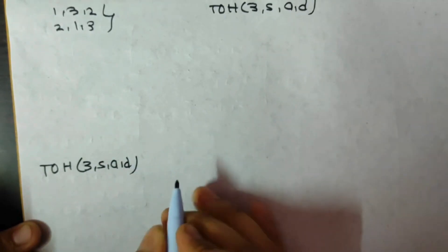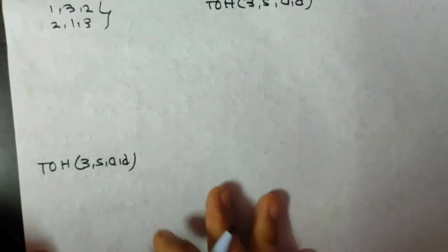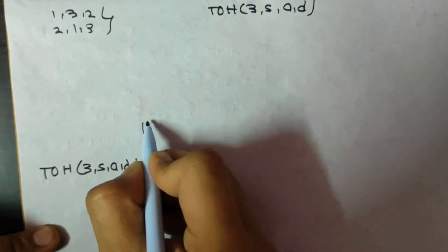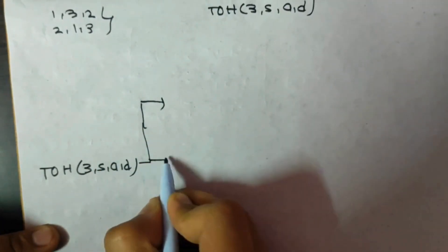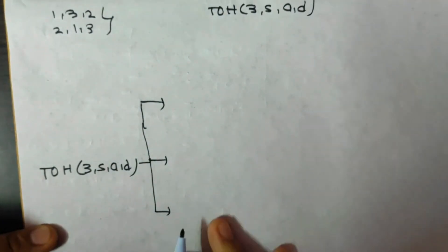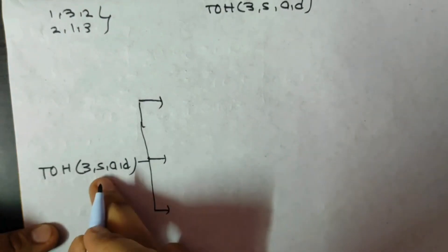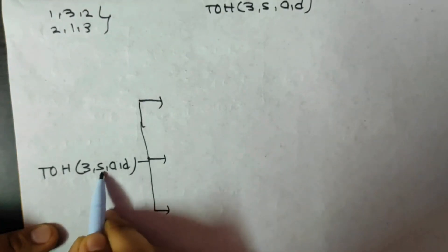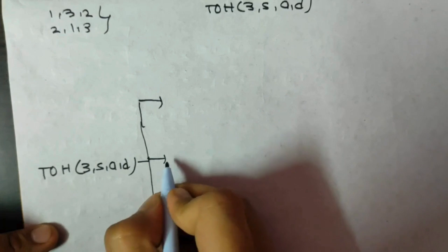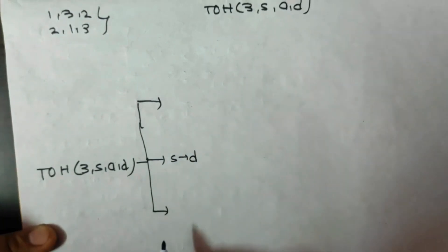First, write down Tower of Hanoi for 3 disks — we have to go from source to destination using auxiliary. These steps are very repetitive, so you repeat the same thing over and over. Break this into three parts: in the middle one, always do the first peg to the last peg, which means S to D.